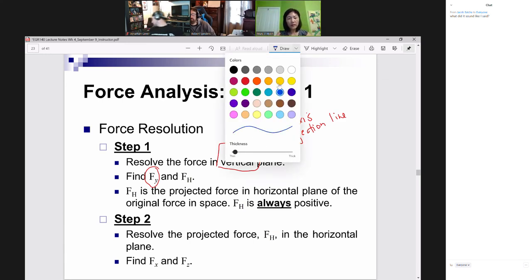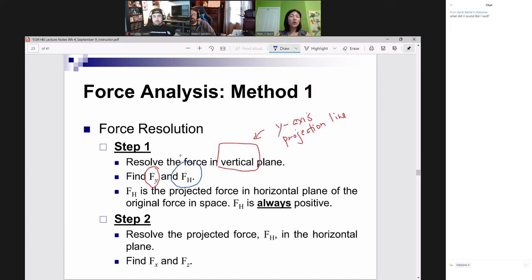And here is a new force that you have never seen before. But you're going to see this only in method one. We're calling this F sub h. That is the force on the projection line. And why the letter h? Your textbook uses the letter h to represent horizontal plane. But do not get confused with this h and the two component forces in your x and z.